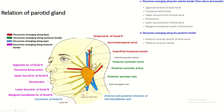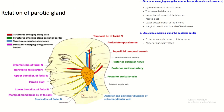Structures emerging along the anterior border: the zygomatic branch, the transverse facial artery, the upper buccal branch of the facial nerve, the parotid duct, the lower buccal branch of the facial nerve, and the marginal mandibular branch of the facial nerve. Structures emerging along the posterior border: the posterior auricular nerve and the posterior auricular artery.